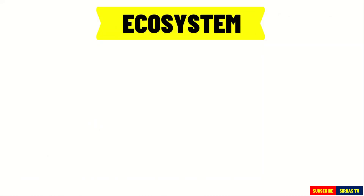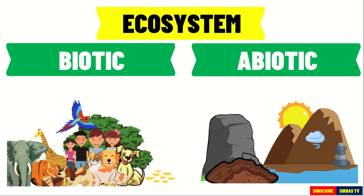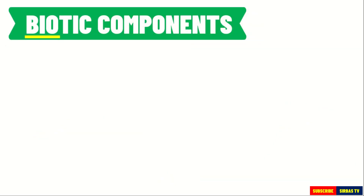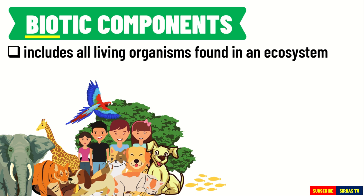An ecosystem has two components: the biotic components and abiotic components. The word 'bio' in the word biotic comes from the Greek word bios, which means life. Therefore, biotic literally refers to living organisms.